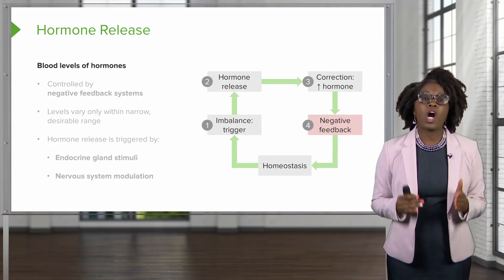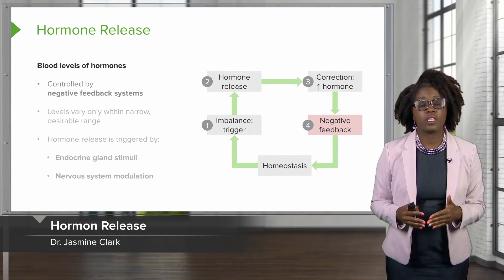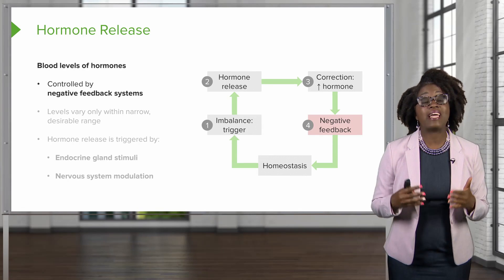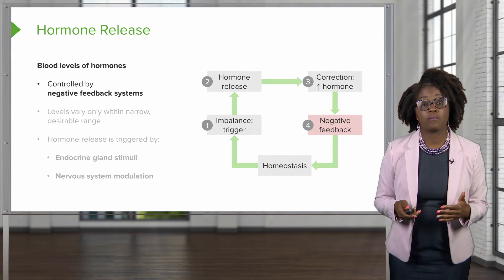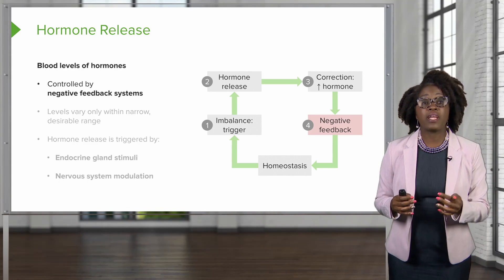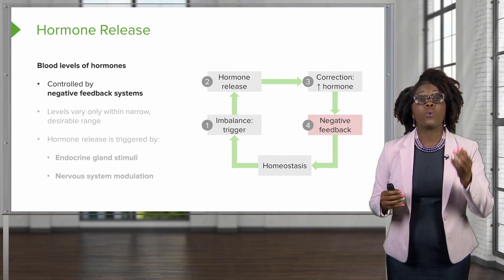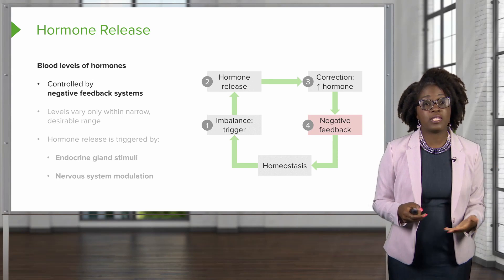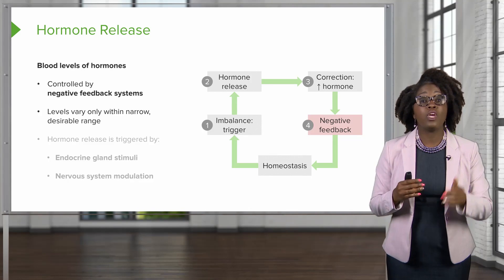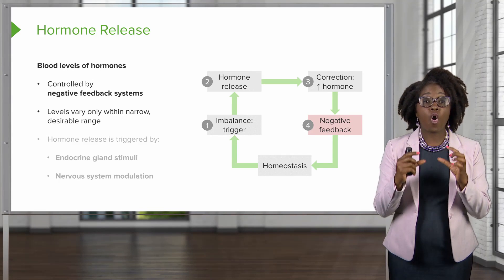What causes hormones to be released from their endocrine glands? Most of the time, blood levels of hormones are controlled by a negative feedback system. This happens when an increased hormone affects the target organ, and the effect on the target organ will then inhibit further hormone release. The levels that vary between release and inhibition are in a very narrow, small range.